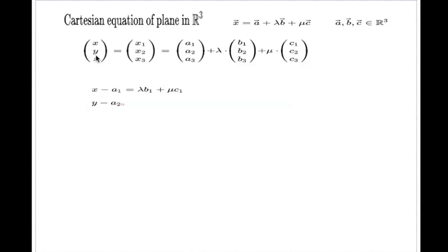Second one will be Y. Subtract this A2 on one side. I just, you see, I move this vector on the left-hand side. And on the right-hand side, you will have this lambda with this B2 and this mu with this C2. Similarly, you do the last component of your equation.